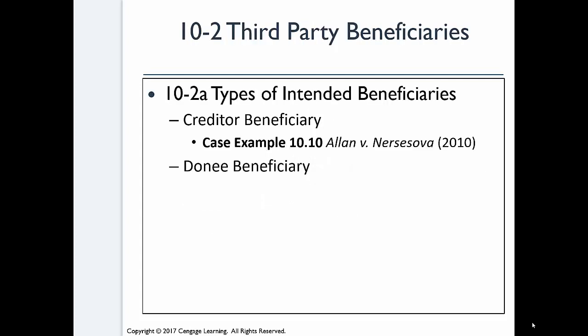Now that we understand assignment and delegation, we need to look at third-party beneficiaries. Life insurance is a great example. Someone buys the policy and pays on it to the insurance company; at the death of that person, the benefit is paid to a third party — a spouse, a business partner, a child. This is an exception to the general rule that if you're not a party to the contract, you can't benefit from it. These exceptions are very limited.